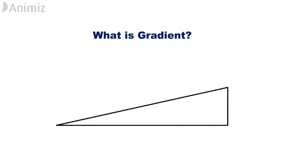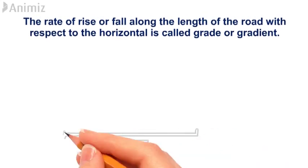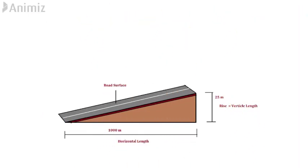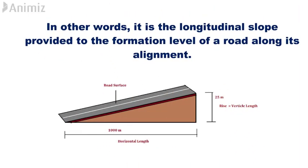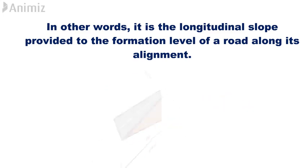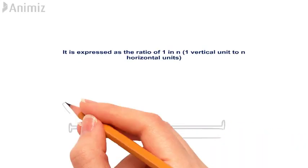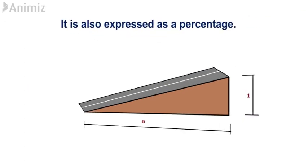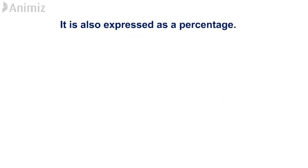What is gradient? The rate of rise or fall along the length of the road with respect to the horizontal is called grade or gradient. In other words, it is the longitudinal slope provided to the formation level of a road along its alignment. It is expressed as the ratio of 1 in n — 1 vertical unit to n horizontal units. It is also expressed as a percentage.